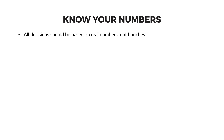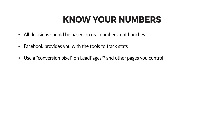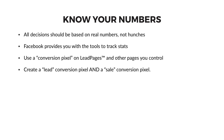If you set things up properly, you'll be able to make your decisions based on real numbers, not hunches or theories. Fortunately, Facebook provides you with all the tools you need to track your stats. The first one of these tools is known as a conversion pixel. With a conversion pixel in place on your most important website pages, you'll be able to tell when conversions have actually happened.